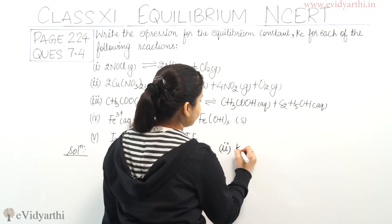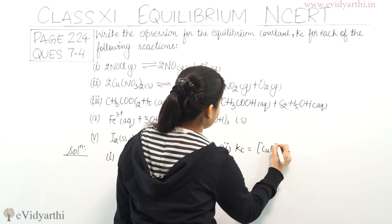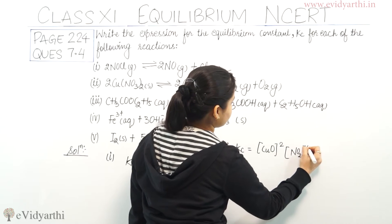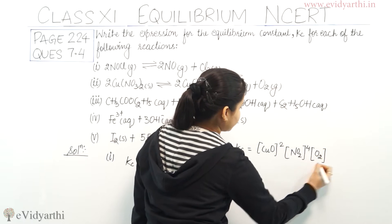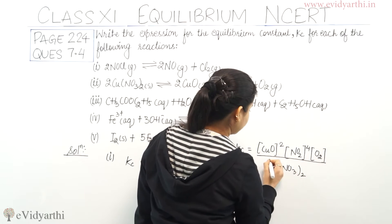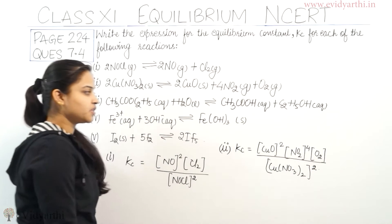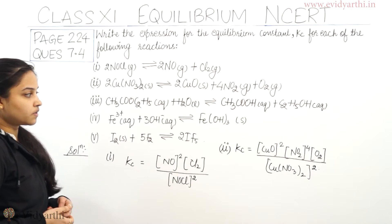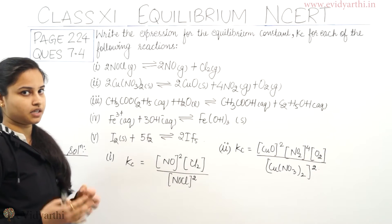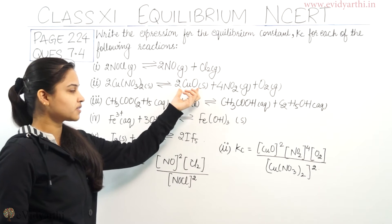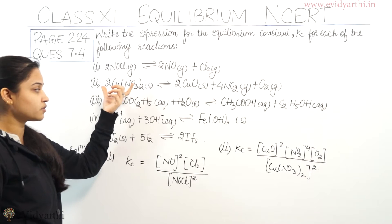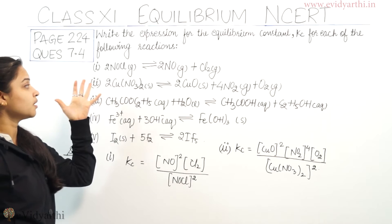So Kc equals [CuO]² × [NO₂]⁴ × [O₂] divided by [Cu(NO₃)₂]². But I want to tell you that the concentration for compounds in the solid state is always 1. So CuO, which is in the solid state, has concentration 1, and Cu(NO₃)₂, also in the solid state, also has concentration 1.